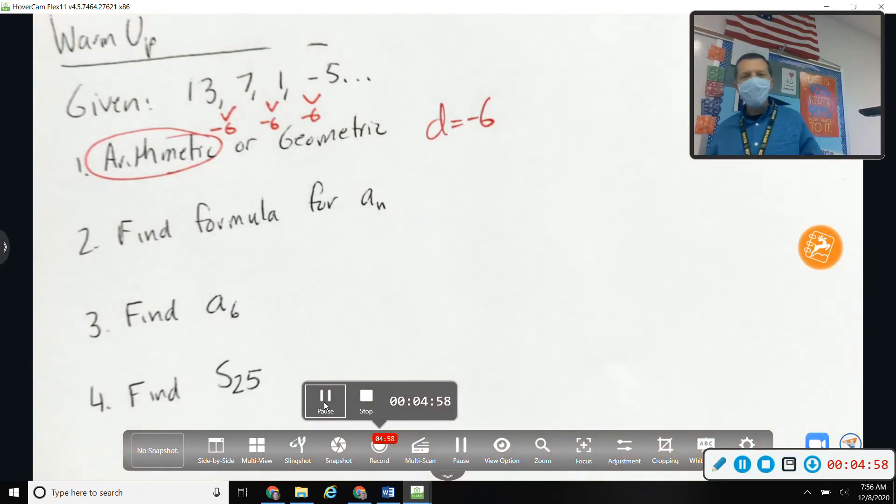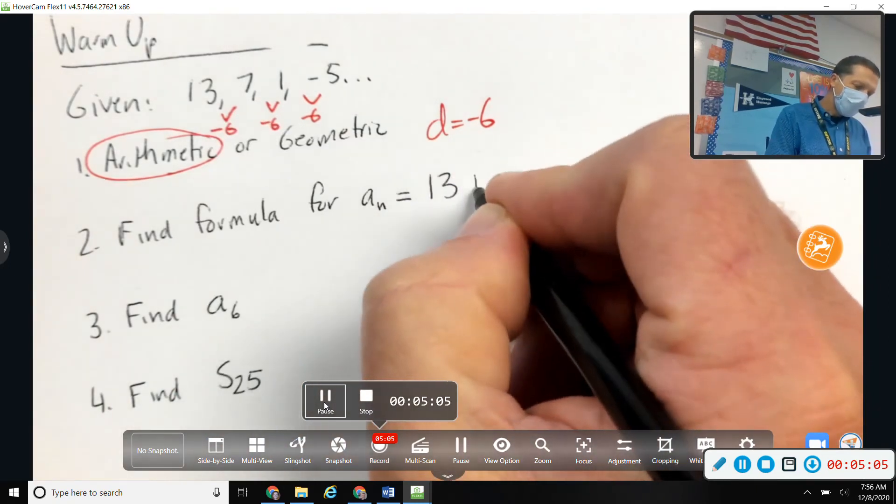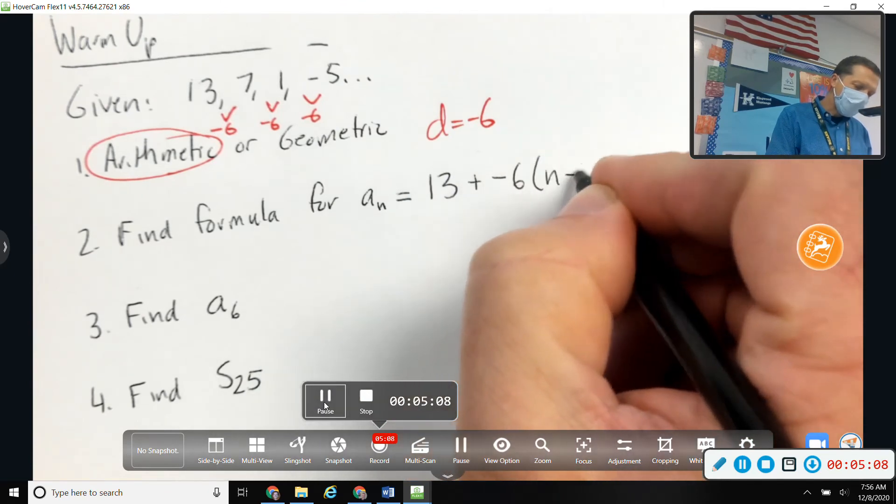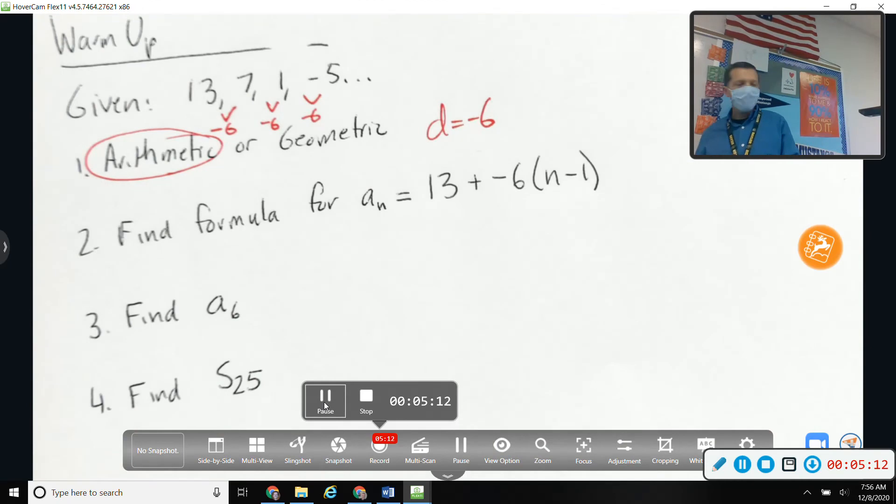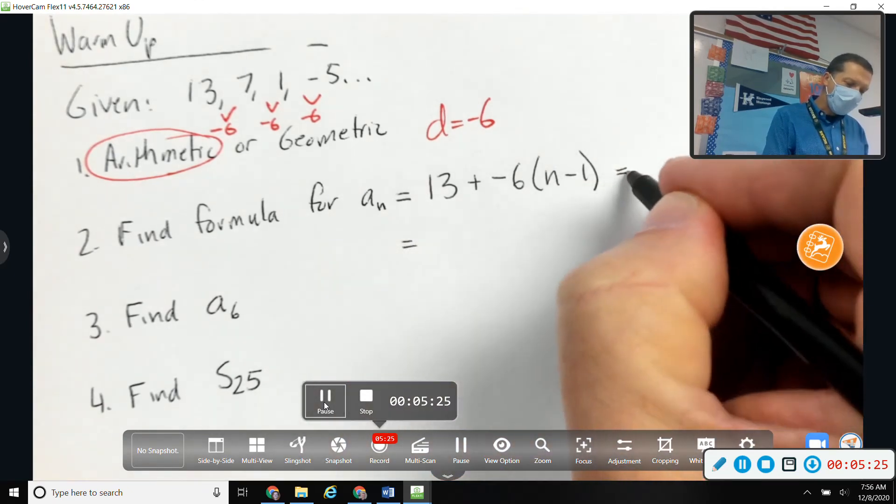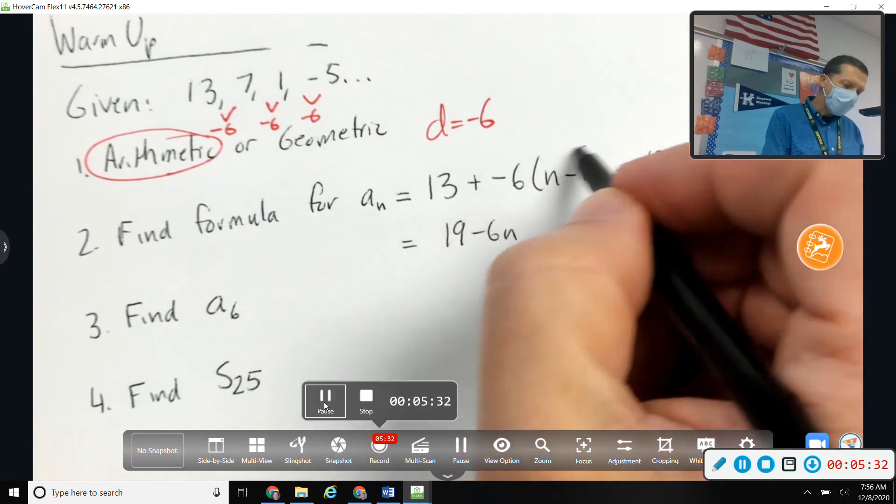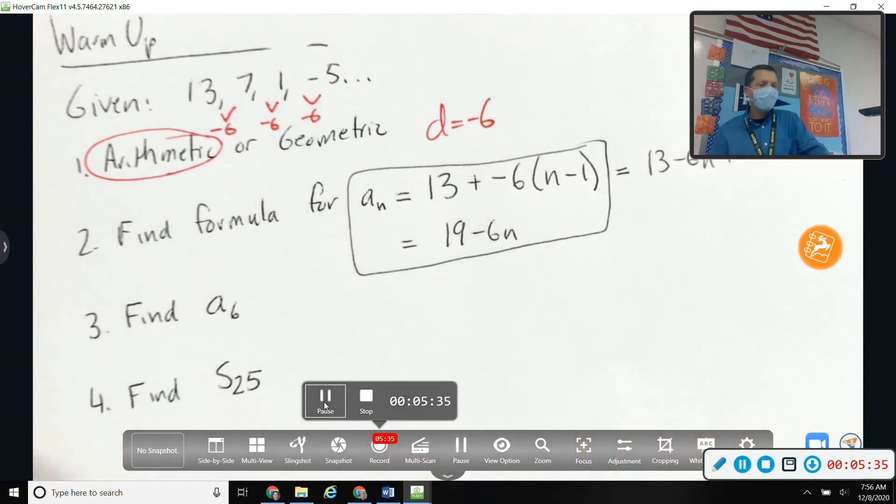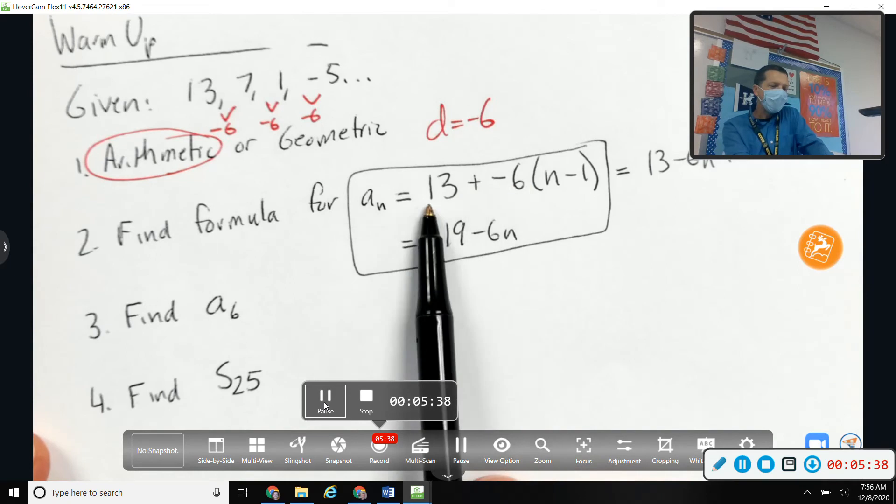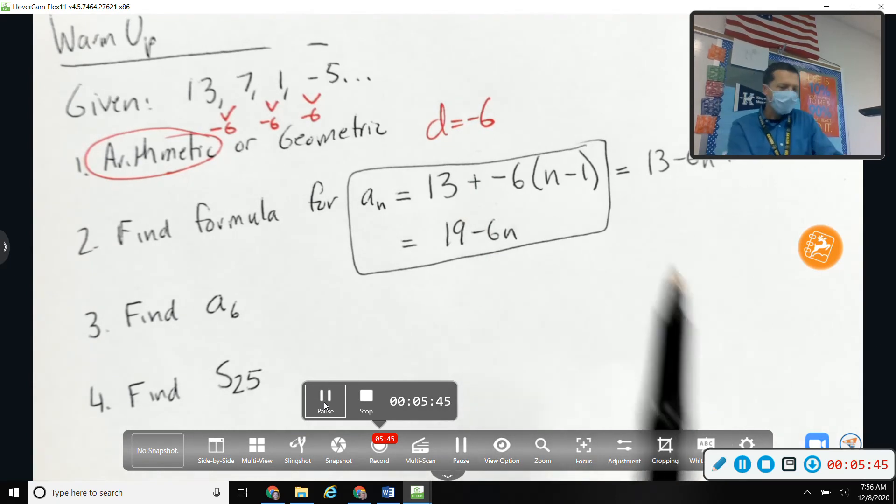Where the common difference is negative six. So aₙ is the first term plus negative six times n minus one, or some of you just wrote minus six times n minus one, that was okay. The test asked for a simplified formula, you don't have to give the simplified formula, you can leave it as that. But the simplified formula would be minus 6n plus 6, so 19 minus 6n. But I'm okay with either one of those. This one's simplified but this one's kind of nice because you can tell what the first term is and tell what d is pretty easily. So whichever one you prefer is fine.